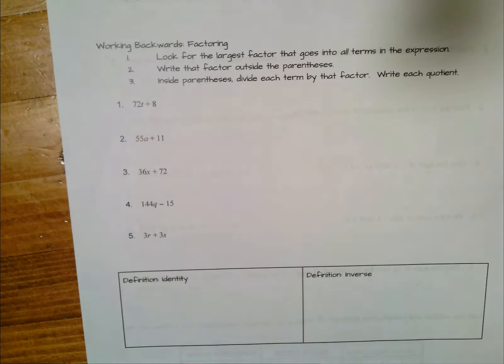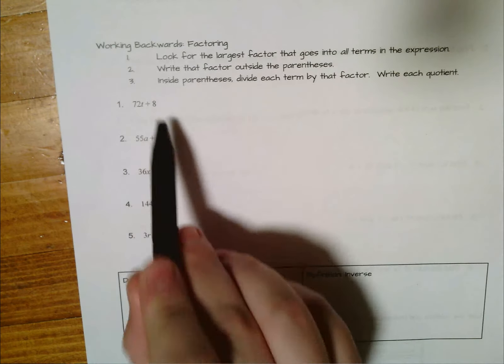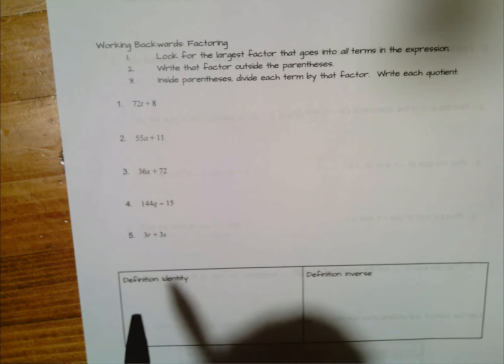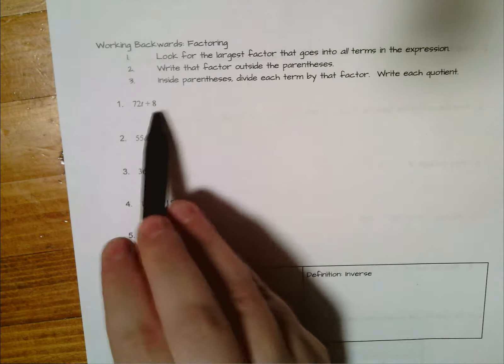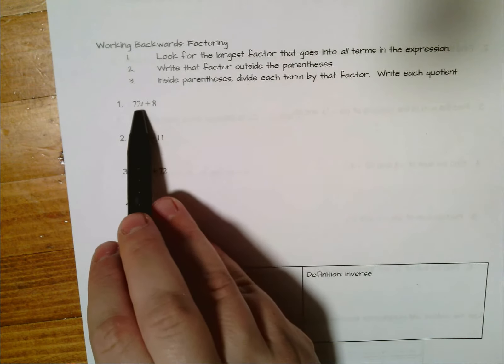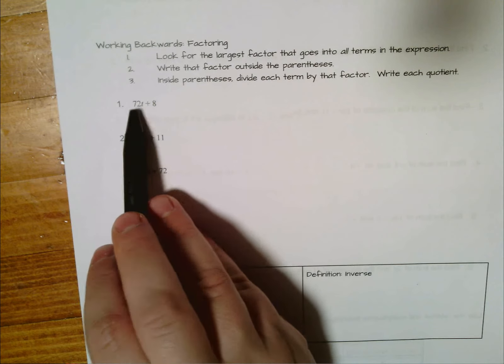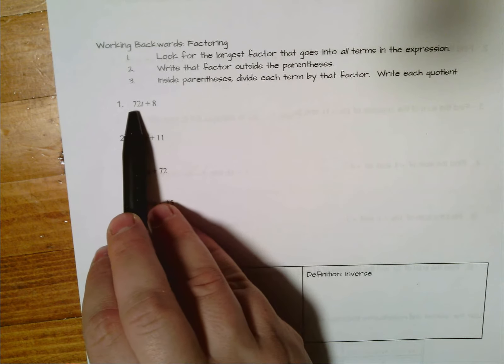Alright, so let's take a look at 72t plus 8. Let's think of the biggest number that goes into both of them. Well I know they're both even so two goes in, four must go in as well because half of 72 is 36 which is also even, and in fact eight must go into all of them because half of 36 is also even.